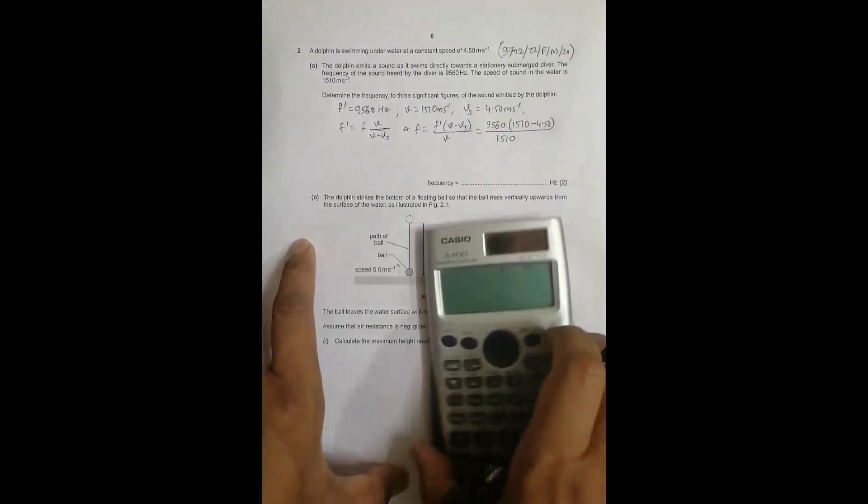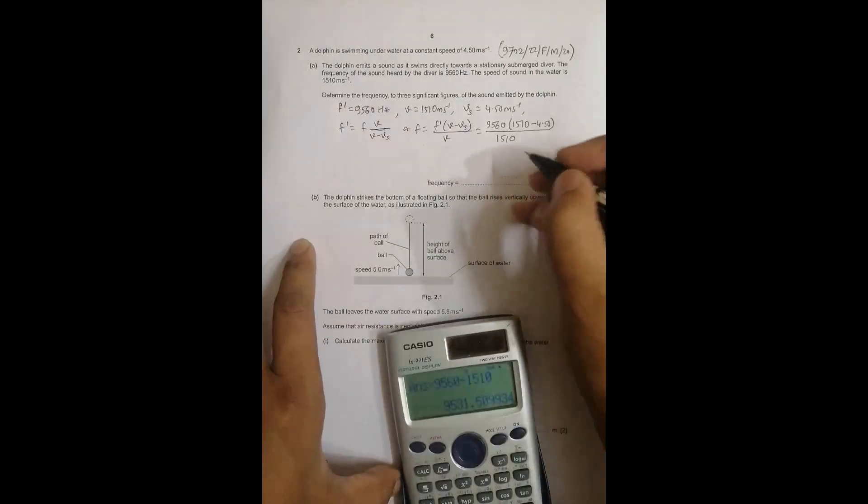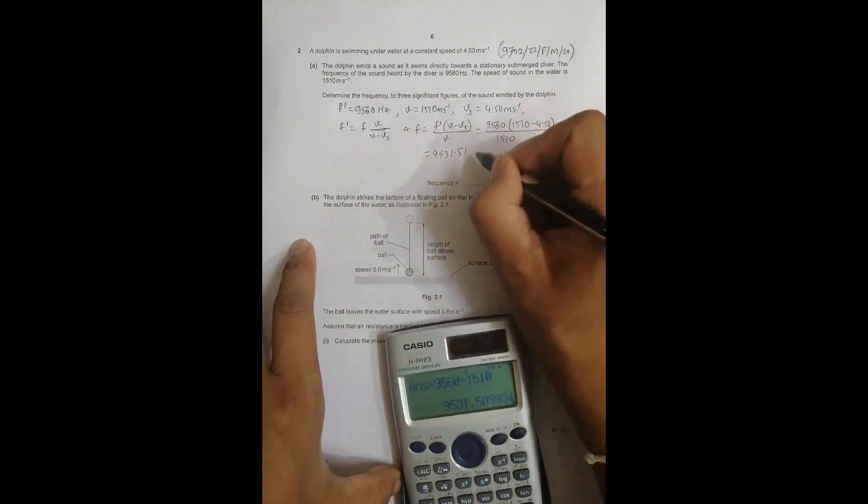Doing the calculations, 1510 minus 4.5 times 9560 divided by 1510 equals 9531.51 hertz.